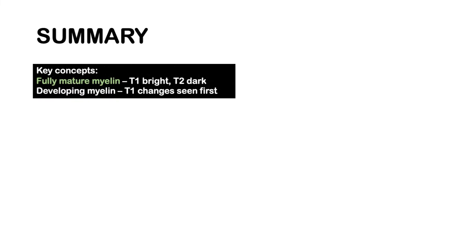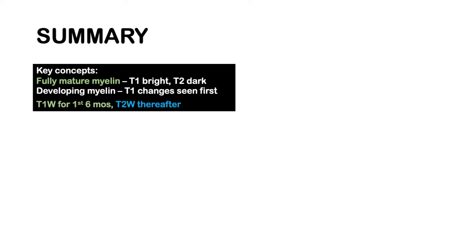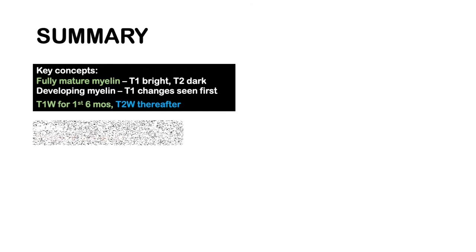In summary, fully mature myelin is T1 bright and T2 dark, and developing myelin shows T1 changes first — T2 comes later. Therefore, we use T1-weighted imaging for the first six months, and T2-weighted images thereafter.